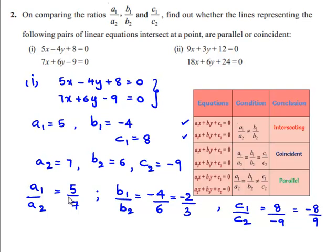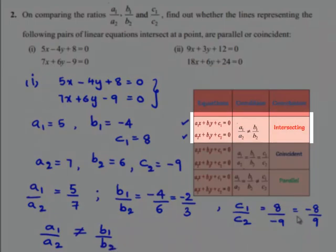Observing the values: a1 by a2 is 5 by 7, b1 by b2 is minus 2 by 3, and c1 by c2 is minus 8 by 9. None of these ratios are equal, so a1 by a2 is not equal to b1 by b2, which is also not equal to c1 by c2.